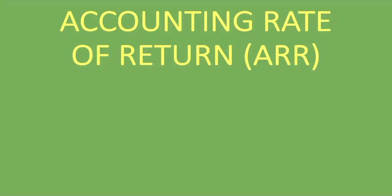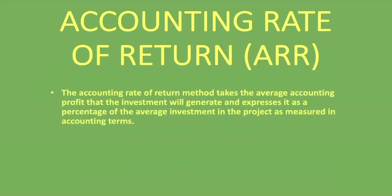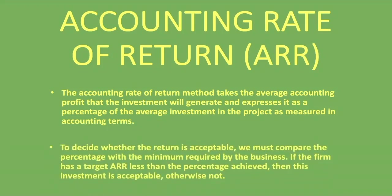The theory we'll go through is the same as the previous example, so if you've watched that one you can skip to the worked example. But if you haven't, follow along. The accounting rate of return method takes the average accounting profit that the investment will generate and expresses it as a percentage of the average investment in the project. To decide whether the return is acceptable, we compare it with the minimum required by the business. If the firm's target ARR is less than the percentage achieved, the investment is acceptable — otherwise not.